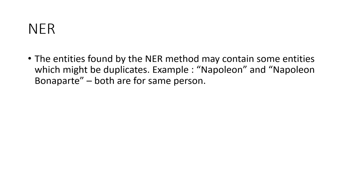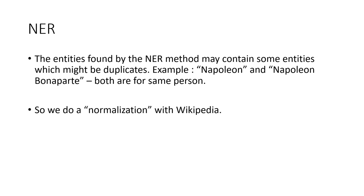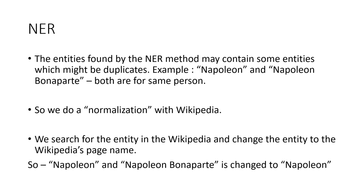The entities found by the NER method may contain duplicates. For example, Napoleon and Napoleon Bonaparte are the same person, but after NER they will be treated as two different entities. So we perform normalization using Wikipedia — we search for the entity on Wikipedia and change it to the Wikipedia page name, so both Napoleon and Napoleon Bonaparte become Napoleon.